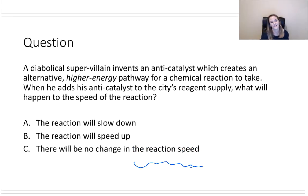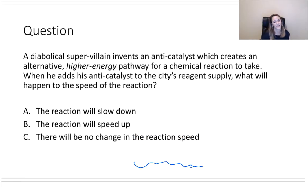So we're at the very last question. The question is: a diabolical super villain invents an anti-catalyst, which creates an alternate higher energy pathway for a chemical reaction to take. When he adds his anti-catalyst to the city's reagent supply, what will happen to the speed of the reaction? What do you think?